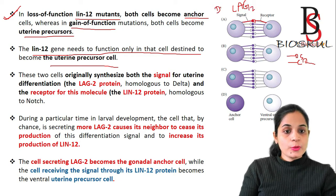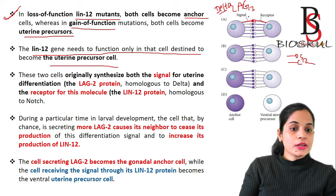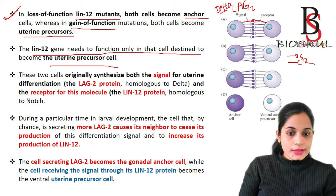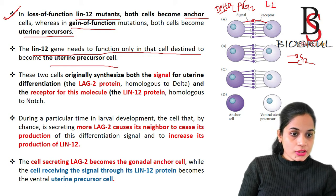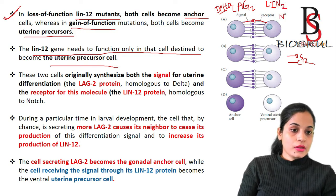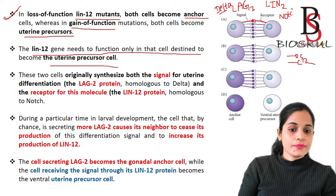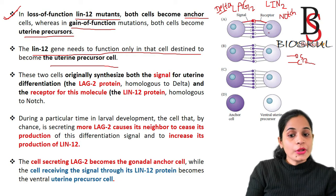As noted, anchor cell formation is mediated by the Delta-Notch signaling pathway, which is a juxtacrine signaling pathway where the two cells are in physical contact with each other. The receptor molecule is lin-12, which is homologous to Notch. So Delta is the signal and Notch is the receptor.